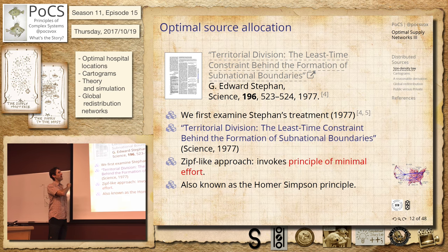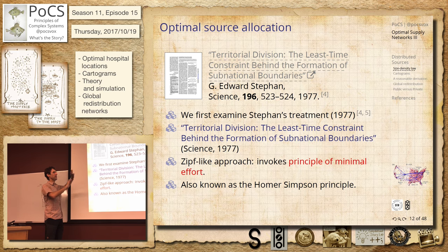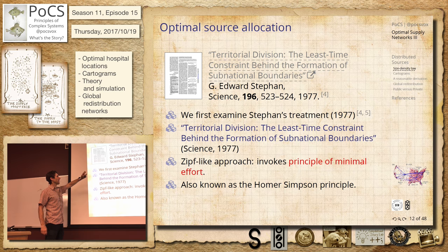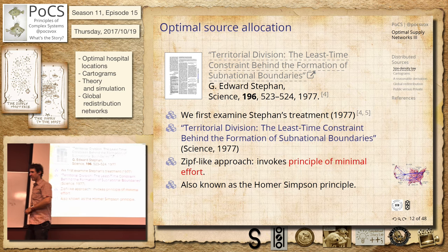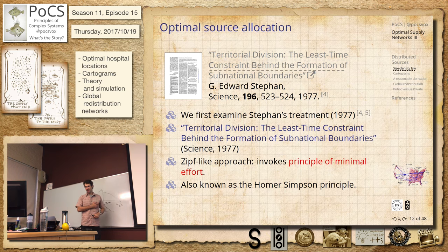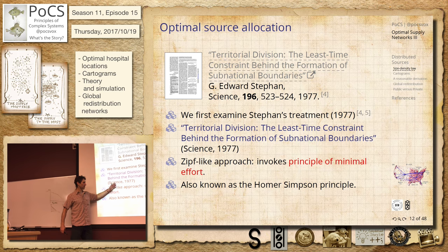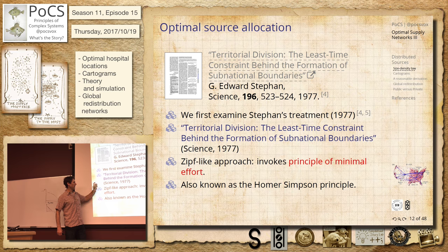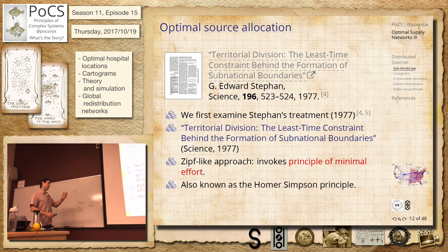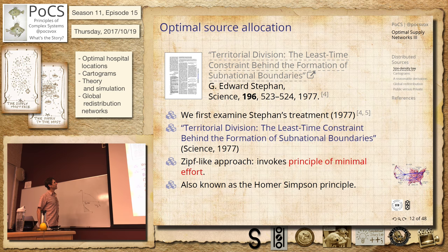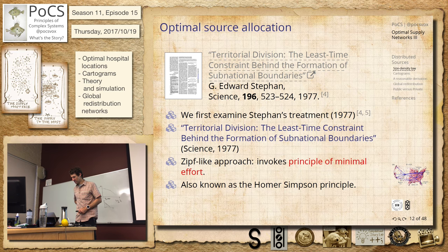We're going to talk about three papers. The first one is by Ed Stephan, published in Science in 1977 — he's a sociologist, and this sort of came out of nowhere at the time. We're going to have a little mathematical bit of work to go through based on this idea of minimal effort. Some people really take this to the limit — they think everyone's lazy, and everything we do is minimal. You can try to explain all sorts of human behavior by that presumption. The idea is subnational boundaries.